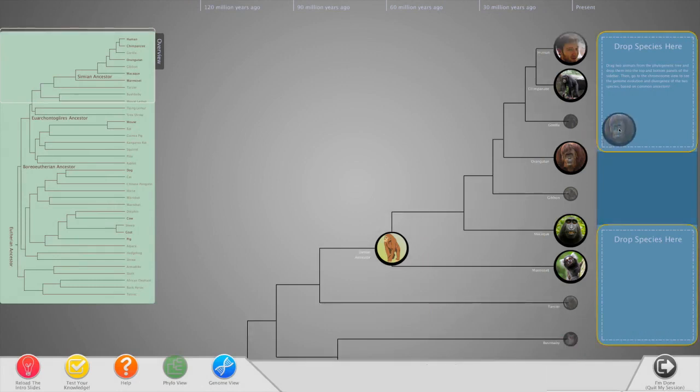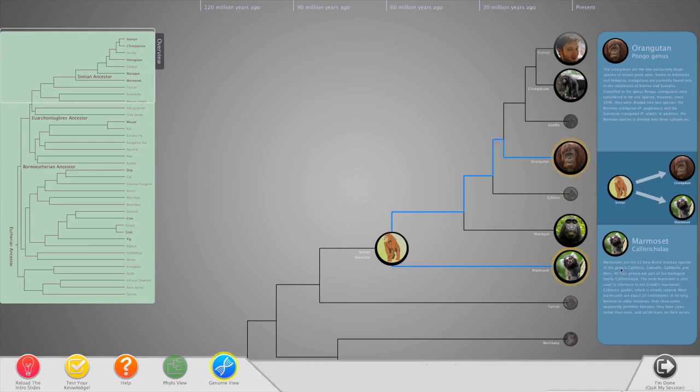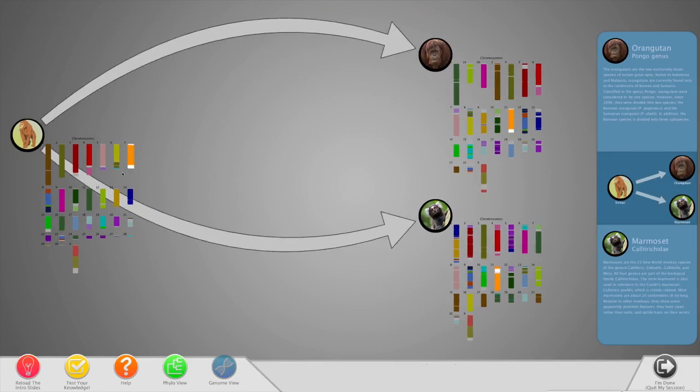Users drag species into the right-hand sidebar, which displays general information about the animal. When two species have been dropped into the sidebar, a mini tree is created. This enables going to the genome view, where users can click on chromosomes to see how they map to a downstream species.